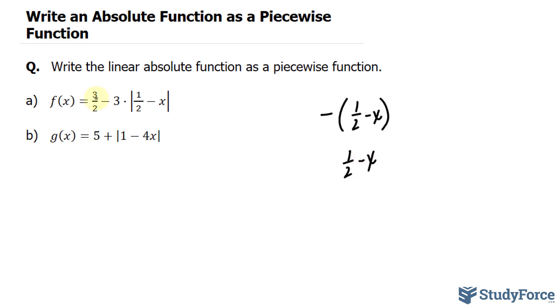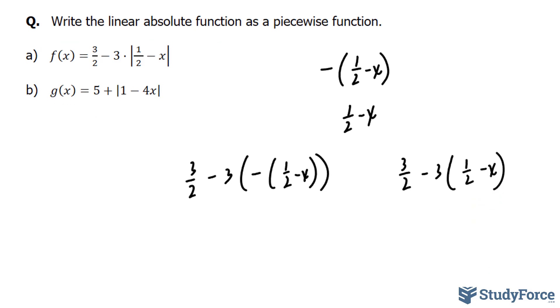The first step to doing this is to simplify the right side under both conditions. Here's what I mean by that. Under the condition where it's negative, we have 3 over 2 minus 3, multiply by negative 1 over 2 minus x, close parentheses. And we'll also be doing this for when it is positive.